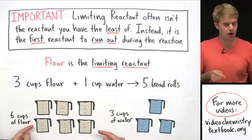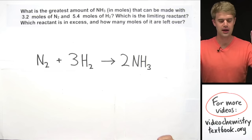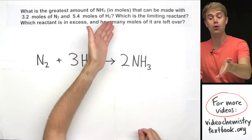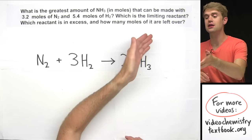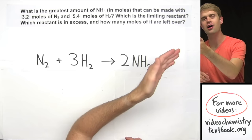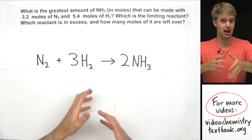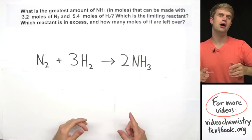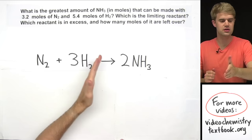Now let's look at an example using a real chemical equation. Here's a chemical equation, and we're going to use it to answer this question: what is the greatest amount of NH3 in moles that can be made with 3.2 moles of N2 and 5.4 moles of H2? Which is the limiting reactant, which reactant is in excess, and how many moles of it are left over? The way we solve this is almost exactly the same as how we solved the flour and water example.